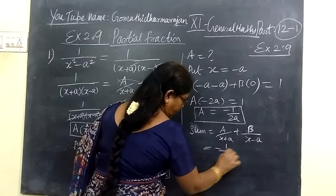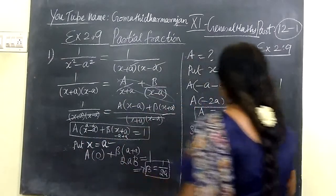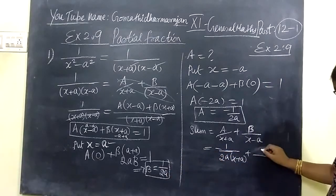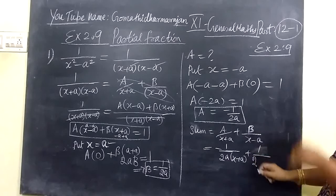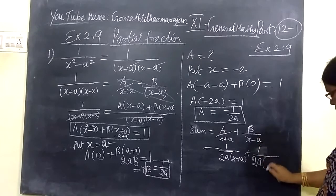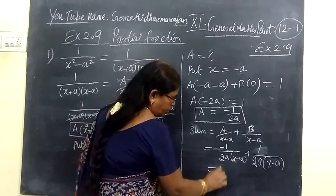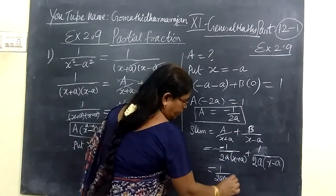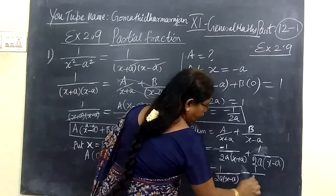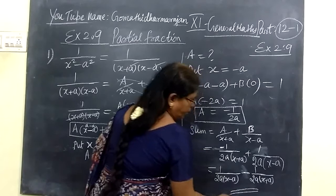Minus 1 by 2A(x plus A), plus B which is 1 by 2A(x minus A). So 1 by 2A(x minus A), minus 1 by 2A(x plus A). And this is the answer for this.